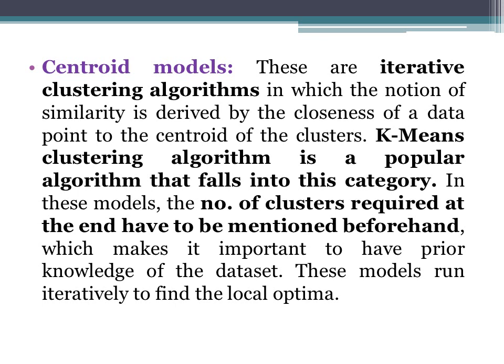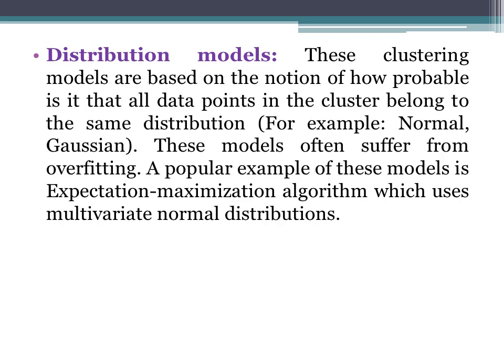The second type of clustering algorithm is centroid models. These are iterative clustering algorithms in which the notion of similarity is derived by the closeness of a data point. The best example of centroid models is K-means clustering, a very well-known and popular algorithm. In K-means clustering, the number of clusters required at the end must be mentioned beforehand, making prior knowledge of the dataset important. These models run iteratively to find the local optima.